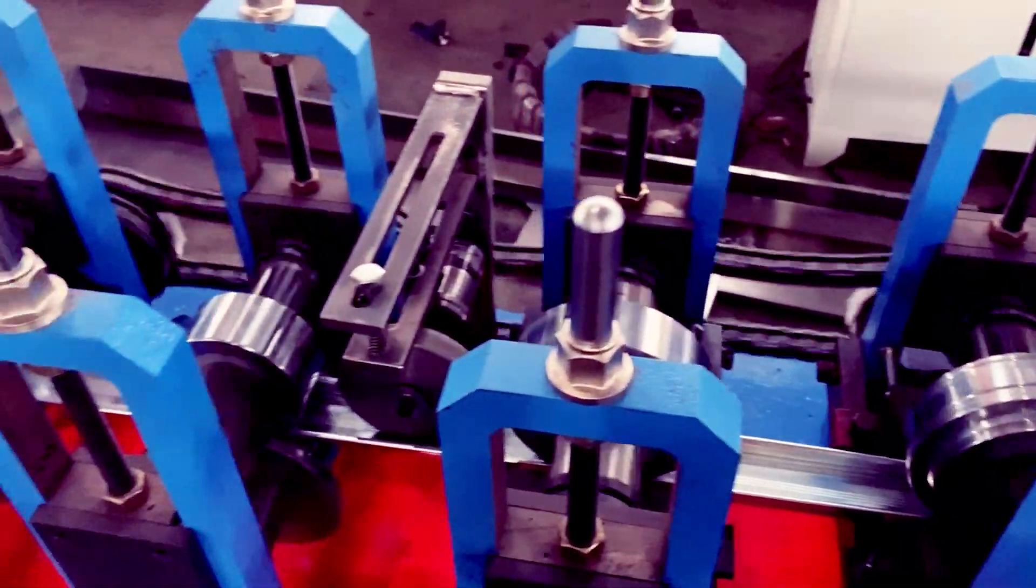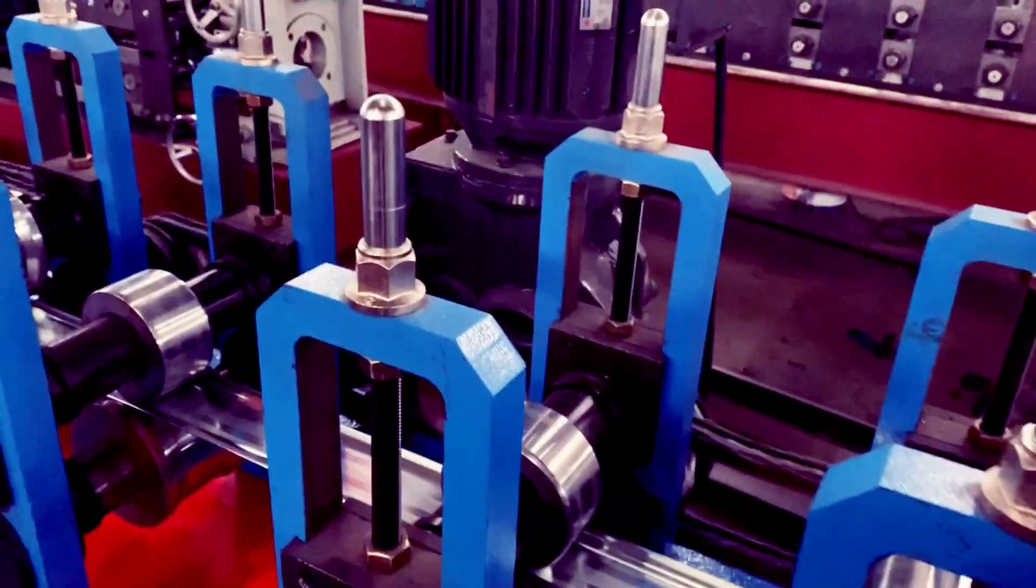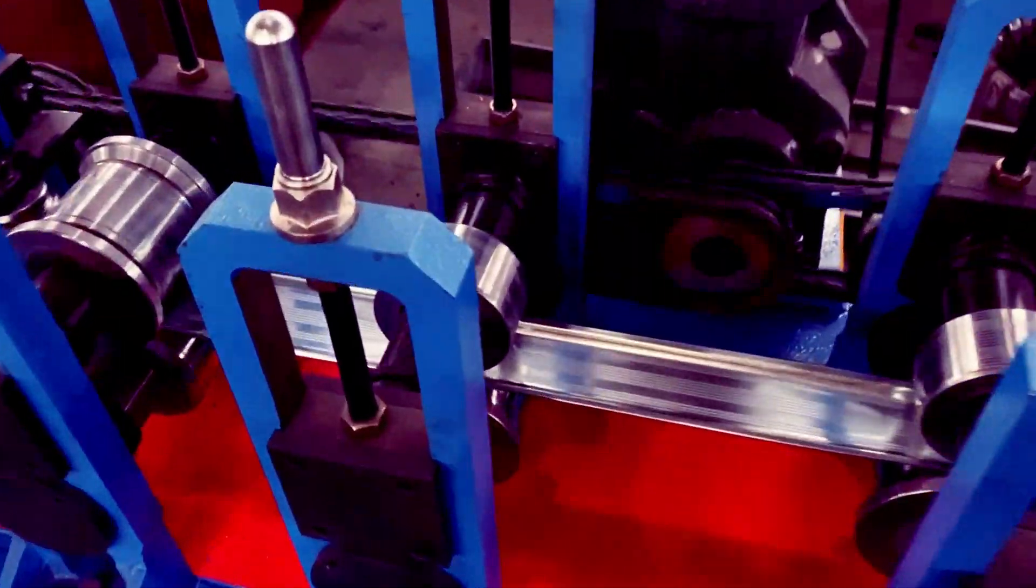Widths of 75, 100, 150, 200, and 300 C-shaped keels can be assembled arbitrarily, and they are connected tightly.